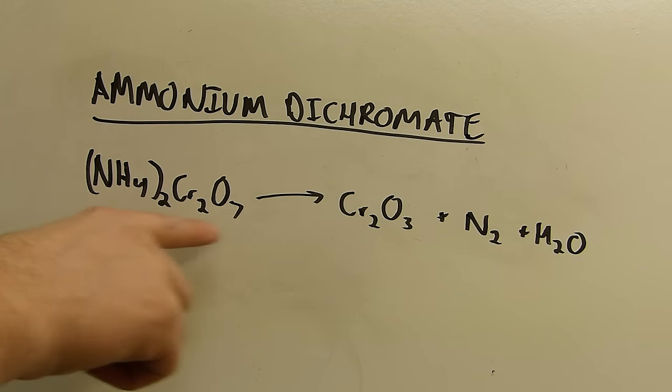This is ammonium dichromate right here. You can see there's a lot of nitrogen, hydrogen, and oxygen surrounding this chromium. It leaves the chromium in a very high oxidation state.